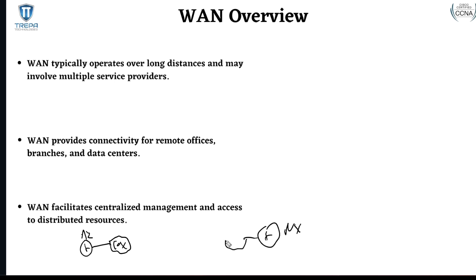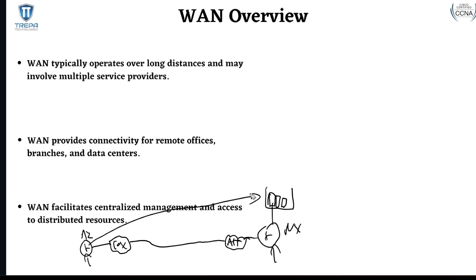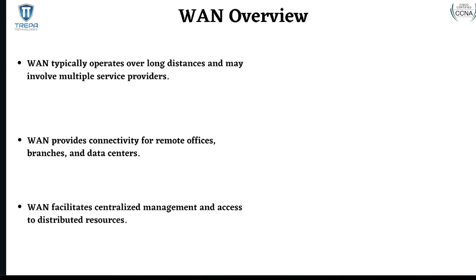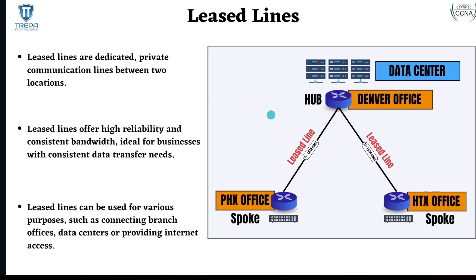WANs typically operate over long distances and may involve multiple service providers. In Arizona, I'm connected to Cox, and in New York they might use AT&T — those ISPs have to be interconnected, which gets into BGP routing and autonomous systems that we don't need to cover here. WAN connections provide connectivity for remote offices, branches, and data centers — for example, a New York office with an on-prem data center hosting enterprise resources like Office 365, SharePoint, or internal websites that Arizona users must access.